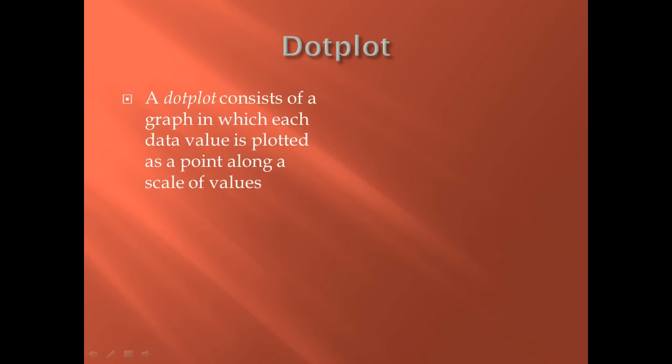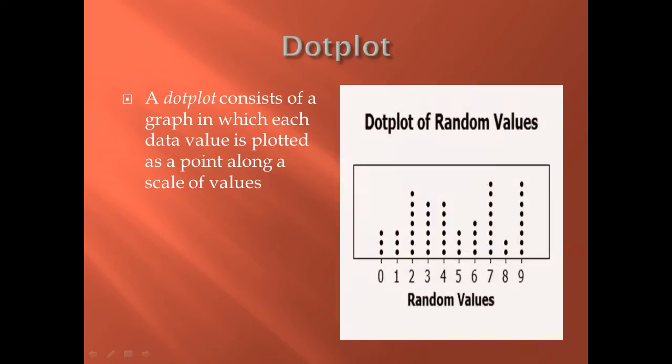A dot plot is similar to a stem and leaf plot, except we're just creating dots. For every time that we see a random value of zero, we put a dot in, so you can see there were three zero random values. We basically do it along a number line and plot dots where needed. If we had decimals, we could plot them in between the two units.